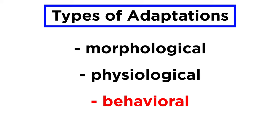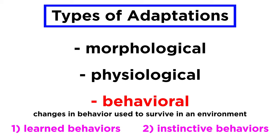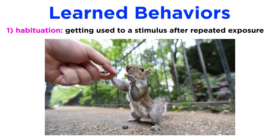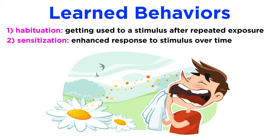There are also behavioral adaptations, which are changes in behavior that certain organisms or species use to survive in their environment. There are two types: learned behaviors and instinctive behaviors. Learned behaviors include habituation, or getting used to a particular stimulus after being exposed to it multiple times, and sensitization, or responding to certain stimuli in an enhanced or more reactive manner. Think about becoming allergic to something like a certain type of food or pollen — your body, by becoming more sensitive, protects you from exposing yourself to these irritants in the future by producing a noticeable and worsening response.